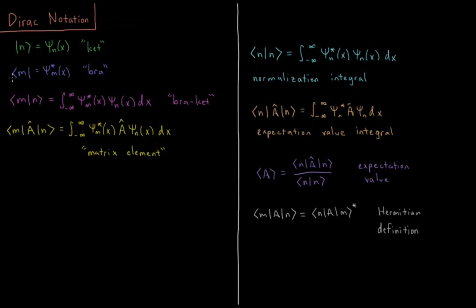So when we put these two together, when we put a bra and a ket together, that represents an overlap integral. So that's the integral from minus infinity to infinity with respect to x of the complex conjugate of psi m times psi n.